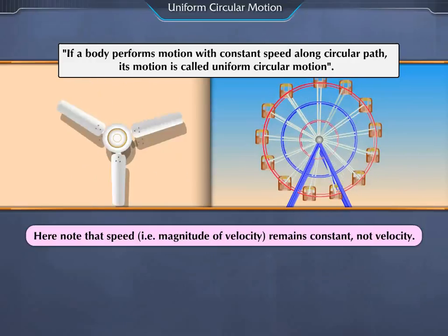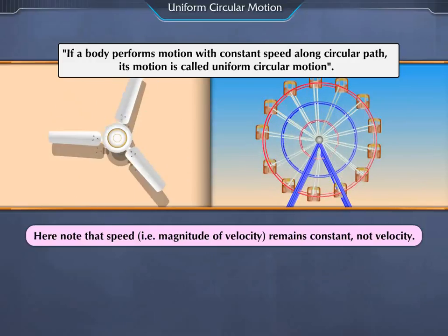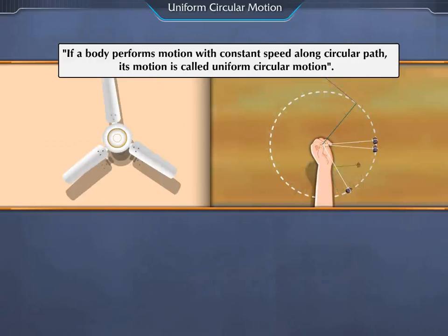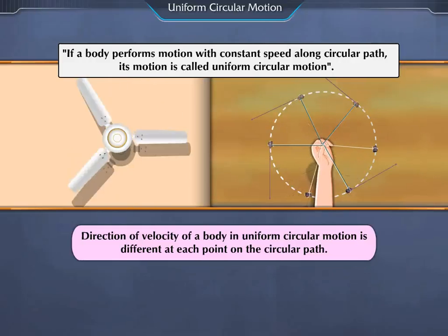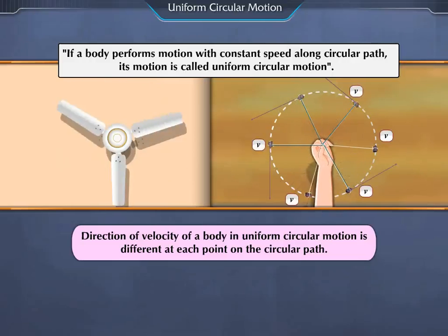Here, note that speed remains constant, not velocity. Direction of velocity of a body in uniform circular motion is different at each point on the circular path.